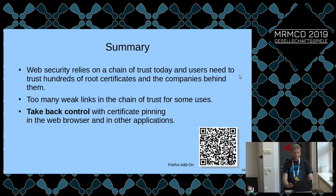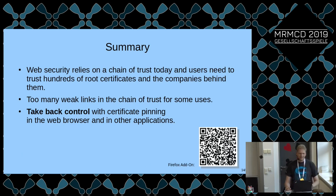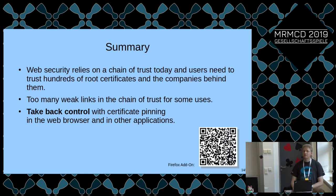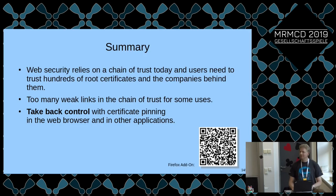Summary: web security today relies on a chain of trust, and this chain of trust has some very weak links. If you don't like those, you can now — at least in Firefox — take back control with certificate pinning. It only works in Firefox because that API is only available there. Google does not have it, so at the moment you can't do this in Chrome or another browser.